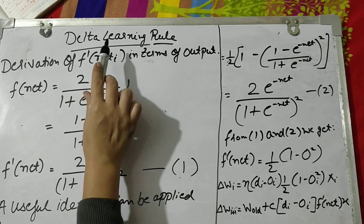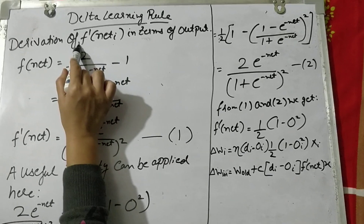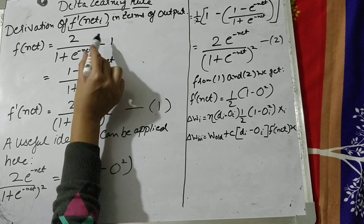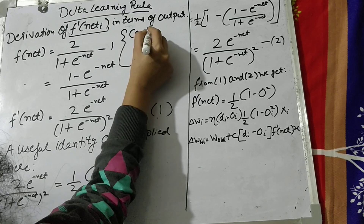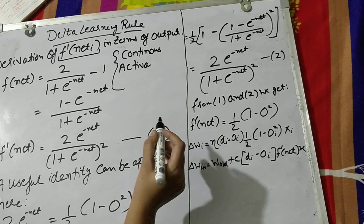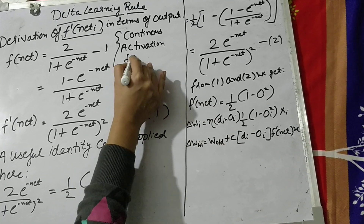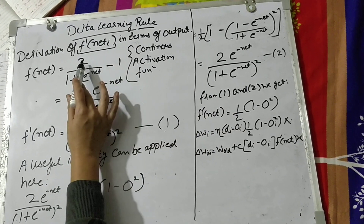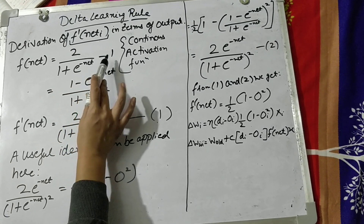In continuation of my previous video lecture on the delta learning rule, I am further deriving f'(net) of i in terms of the output. This particular delta learning rule is based on the activation function which we call the continuous activation function. The formula for this continuous activation function is: 2 divided by (1 plus e raised to the power minus net), minus 1.